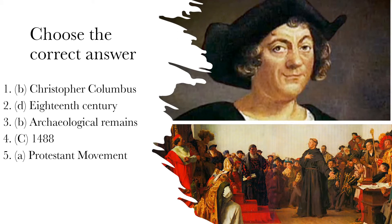Choose the correct answer. First, who discovered the American mainland? Option B — Christopher Columbus. Second, when did the modern period start in Indian history? D — eighteenth century. Third, which of the following is a primary source of information? Option B — archaeological remains. Fourth, when did Bartoloma Diaz reach the tip of South Africa? 1488. Fifth, what is the Reformation also called? Option A — Protestant movement.